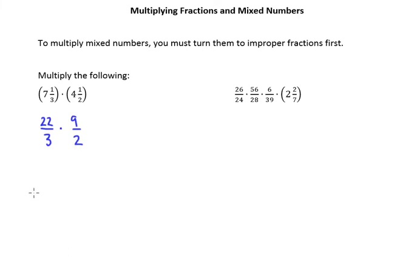And then we do our pre-reducing. Does anything on top cancel to anything on bottom? You bet. 22 and 2 are both even, so we can divide both by 2. So 22 divided by 2 is 11, 2 divided by 2 is 1. And then we have 3 divided by 3 is 1, and that's okay as long as I divide this 9 by 3 also to get 3.